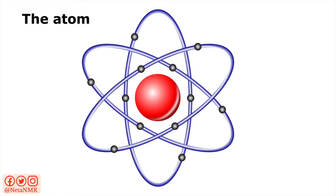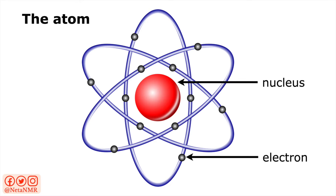Let's start with the atom. This is the usual representation of an atom, but what does it mean? It tries to depict the structure of an atom. What you see here as the central ball, that's the nucleus. And surrounding the nucleus are these other tiny particles called electrons.